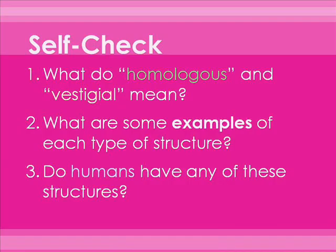Now try to answer these questions: Do you know what homologous and vestigial mean? Can you think of examples of each type of structure? And can you think of examples of human homologous and vestigial structures? Take a few seconds and see if you can answer — the answers will pop up on the screen in just a moment.